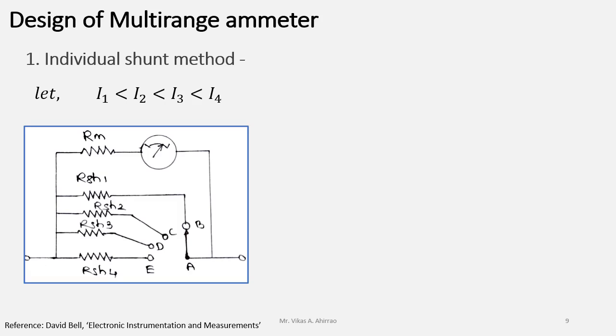As shown in the circuit diagram, all these shunts, those are the individual shunts, are connected in parallel with the basic meter having the internal resistance of Rm and for the particular current range, the corresponding shunt resistor will be selected with the help of a switch.